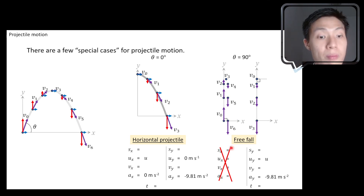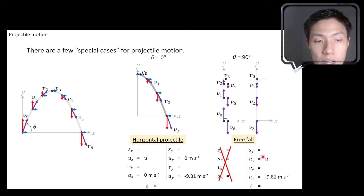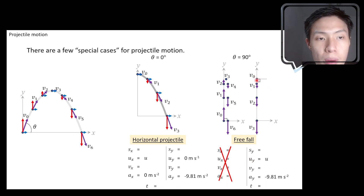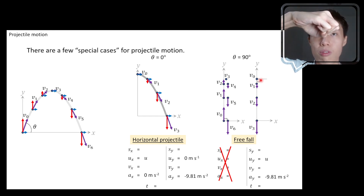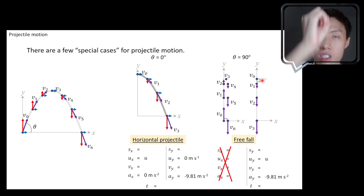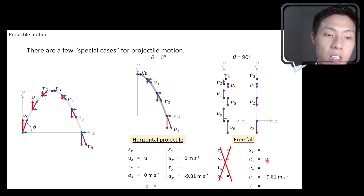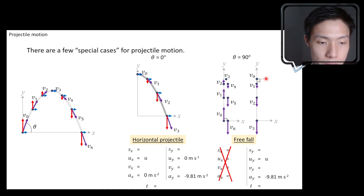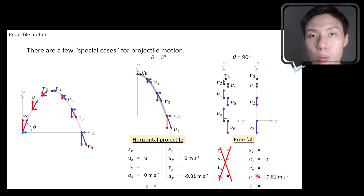For free-fall motion, since everything is happening in the y-component, our initial velocity is entirely the y-component of initial velocity — there is no split into x and y anymore. If you drop an object from up high, the initial velocity will be zero because initially it is at rest, then it slowly starts to speed up. So the y-component of initial velocity is zero for these drop cases. The y-component of acceleration remains negative 9.81 meters per second squared.